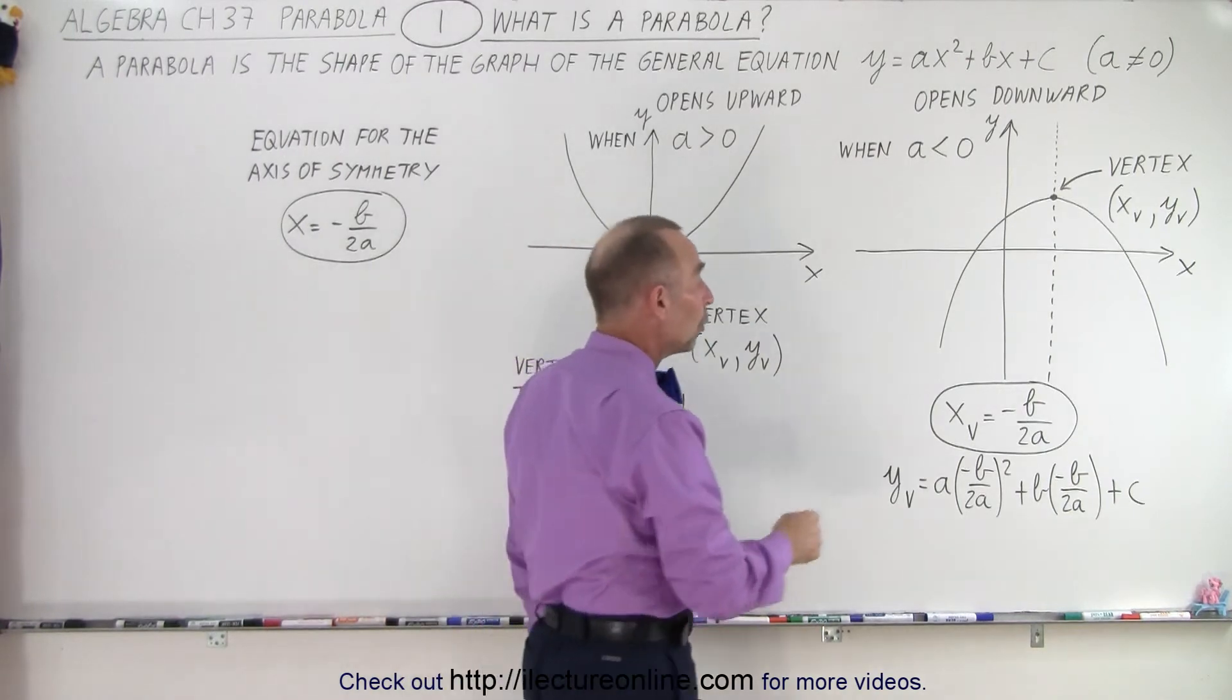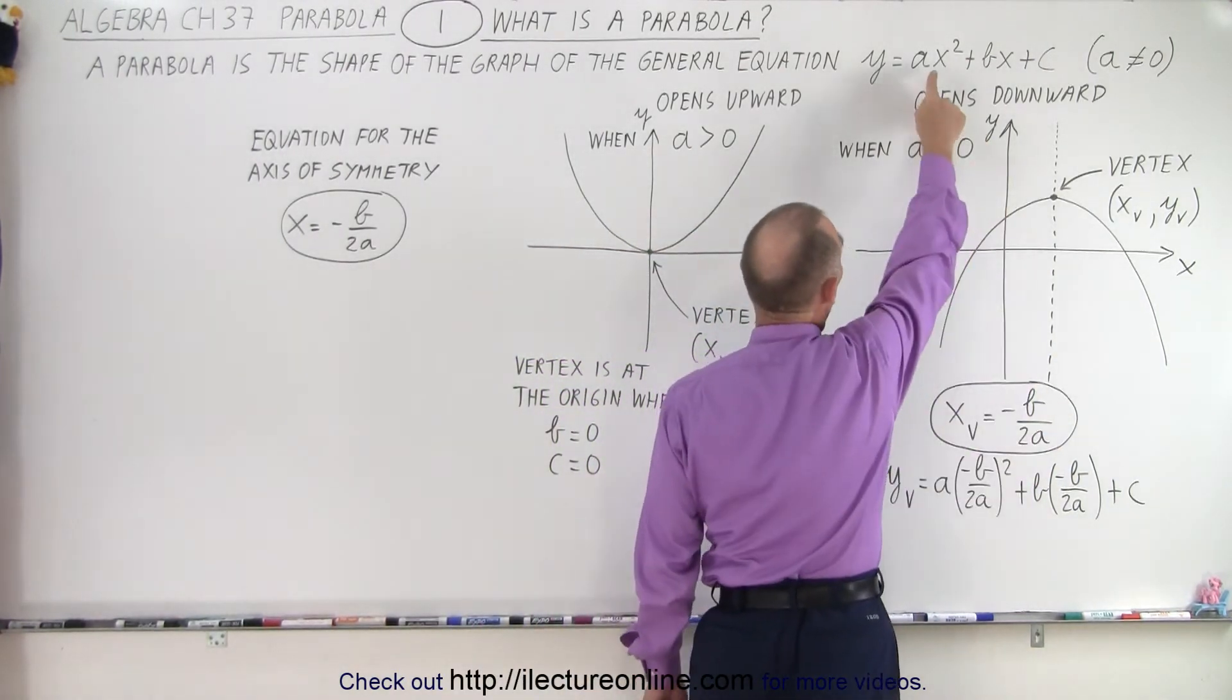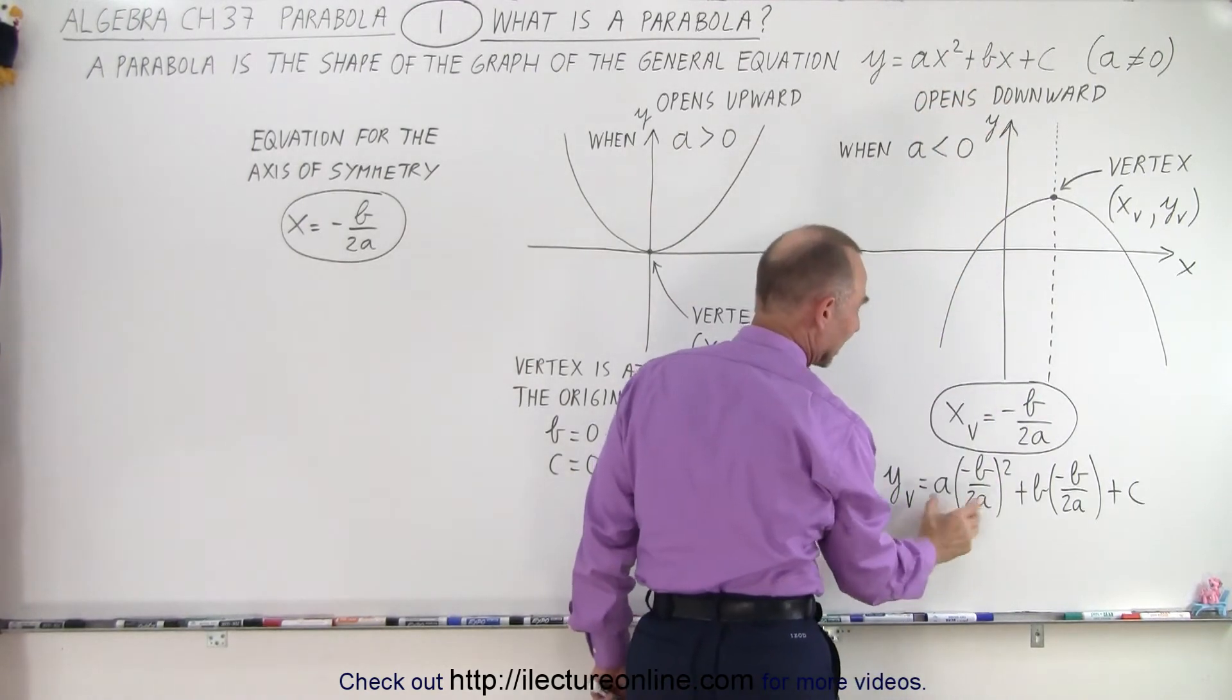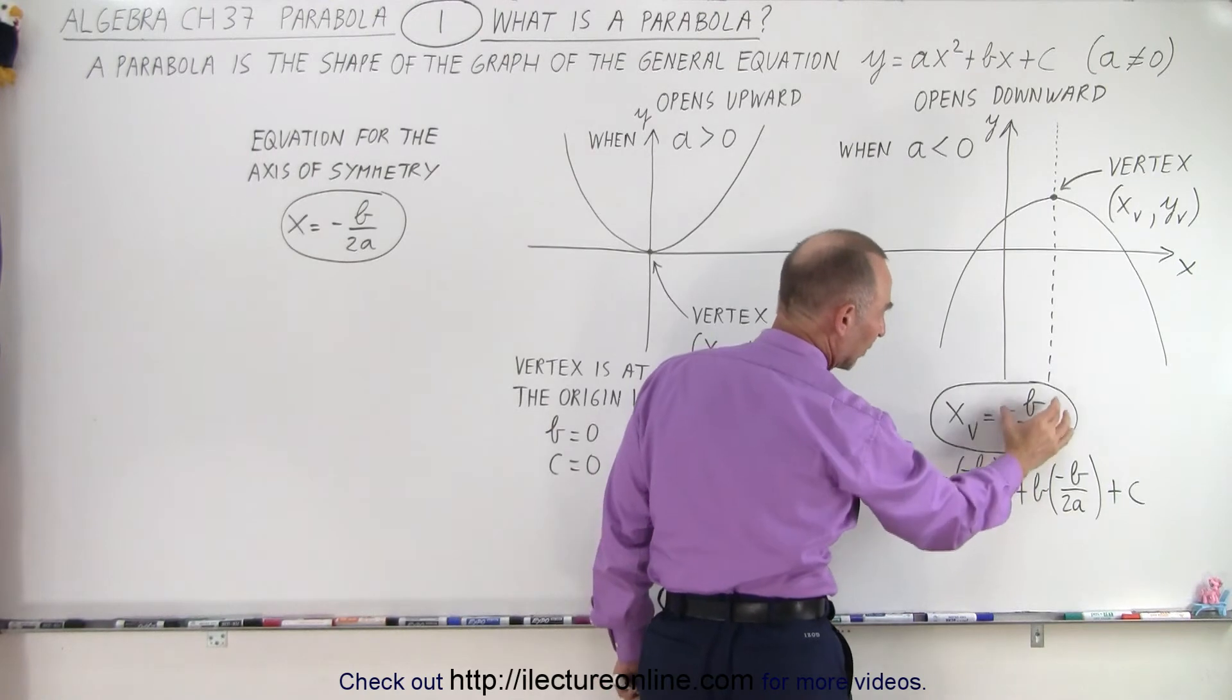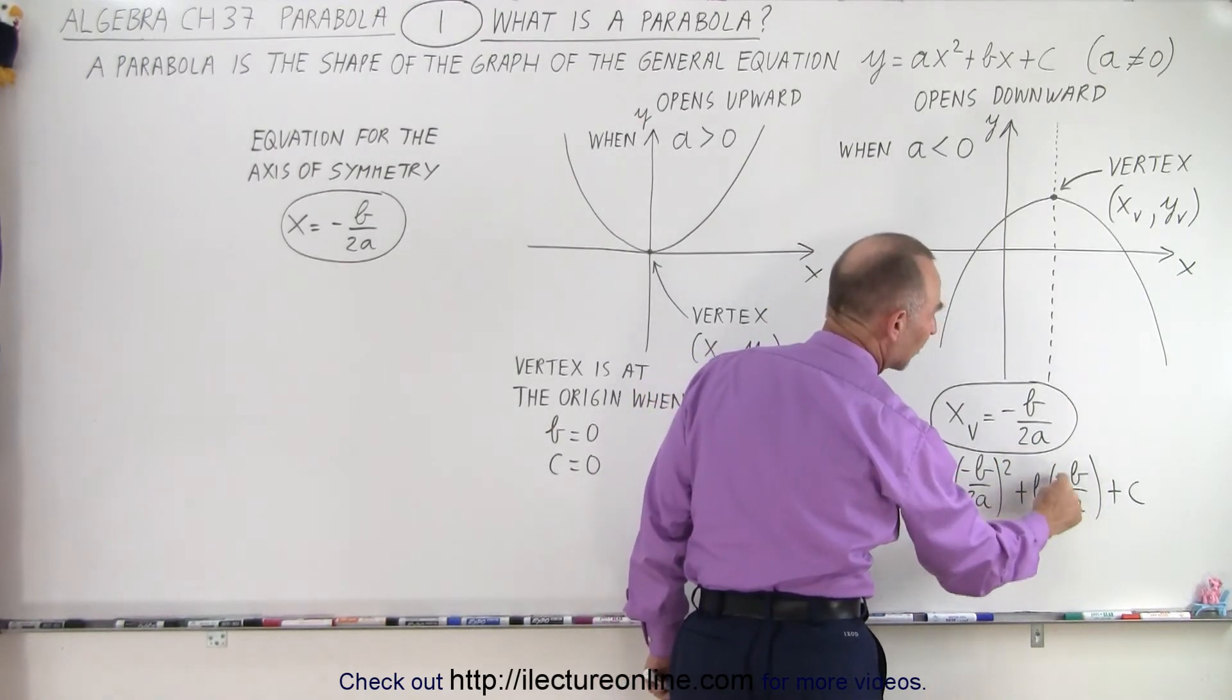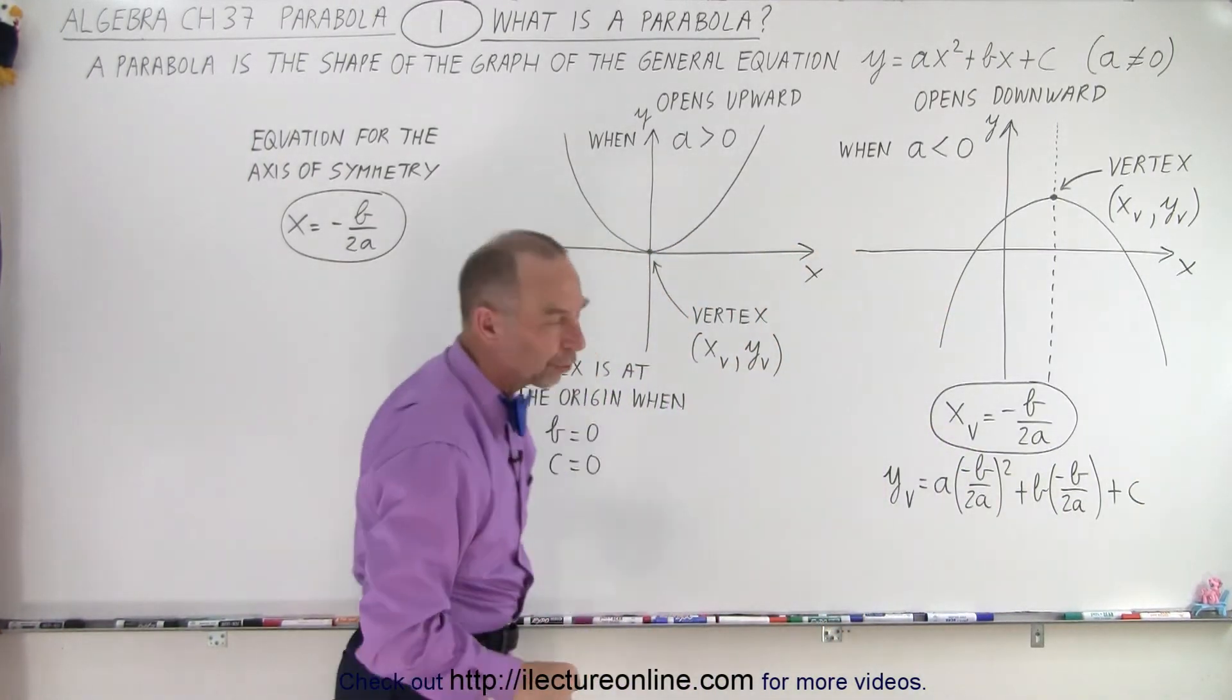Then, to find the y-coordinate, all we have to do is take that value, whatever that value is, and plug it back in the original equation for x squared and for x. In other words, we have a times x squared, but x, of course, becomes minus b over 2a, plus b times x. Again, x becomes minus b over 2a, and this will give you the y-coordinate of the vertex.